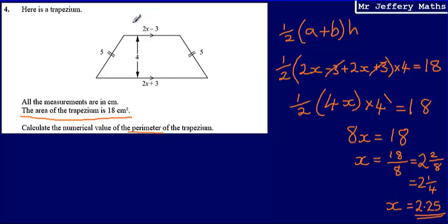So 2 multiplied by 2.25, that's going to be 4.5 minus 3, which equals 1.5.